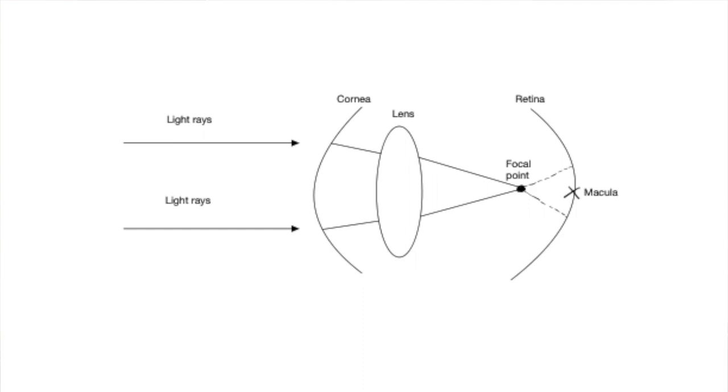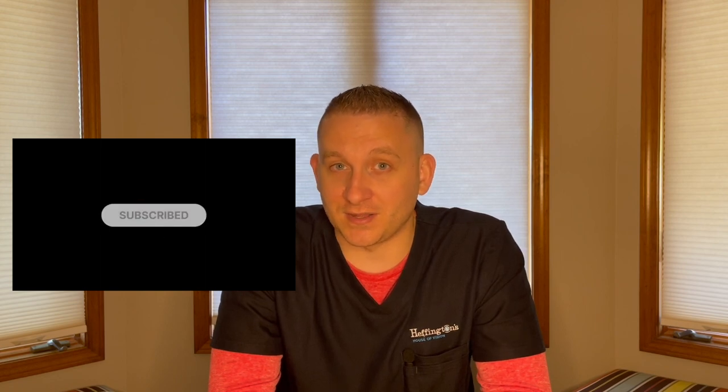That's essentially how nearsightedness works and how it gets corrected. The crystalline lens does change shape and size, but only to a degree — that topic, related to the far side of vision, will be covered in another video. If you have any topics you'd like us to cover or expand on, drop them in the comments below and subscribe to stay up to date. I'm Dr. Bryce Heffington, and we'll see you next time.